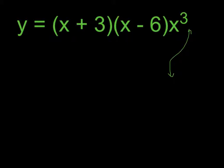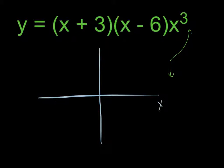Let's go ahead and create our graph. Once we know the basic shape, we can then begin to think about the roots — where is it going to intersect the x-axis? We can pretty clearly tell that it's going to hit the x-axis at negative 3, at 0 because of the x-cubed term, and then again at 6.